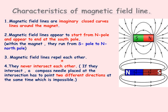The third property: magnetic field lines repel each other. Lines produced by the north pole repel the north pole, and lines considered from the south pole repel the south pole of the other magnet. The fourth characteristic is that they never intersect each other, because if they did, a compass needle placed at the intersection would have to point in two different directions at the same time, which is impossible.